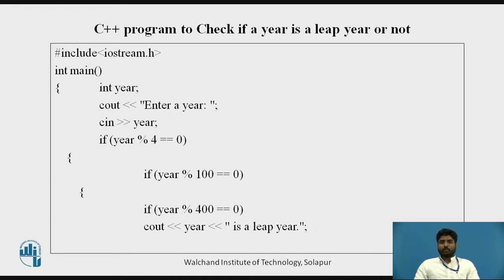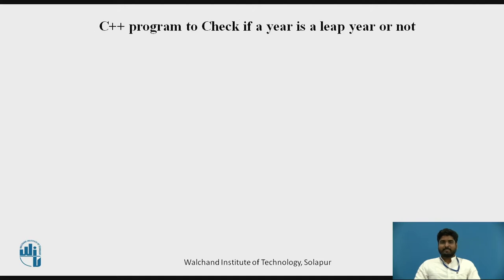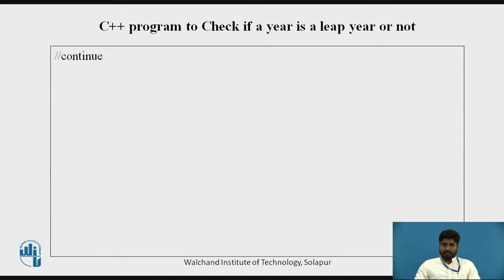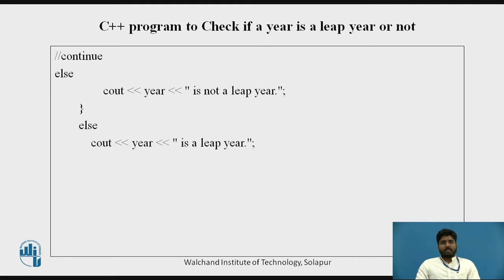For example, 2000 is divisible by 4, by 100, and by 400, so 2000 is a leap year. The three conditions are divisibility by 4, 100, and 400. The program continues on the next slide. For example, if you enter 2019, it is not a leap year.